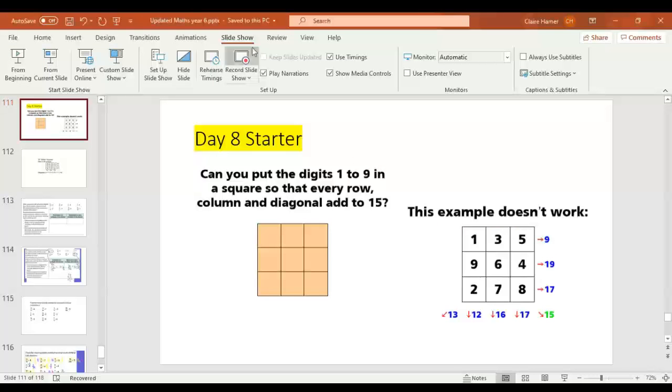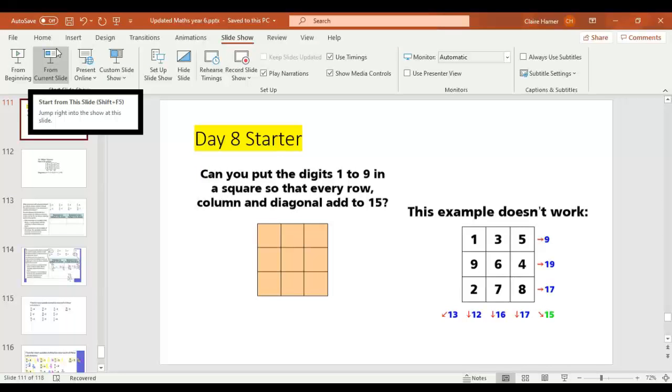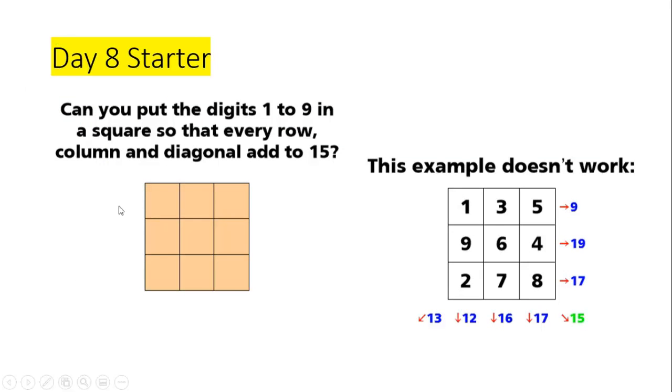Here is today's starter. I'm thinking that you're going to need a piece of paper and a pencil for this. So it says can you put the digits 1 to 9 in a square so that every row, column and diagonal add to 15? Now you can only use each of the digits once.